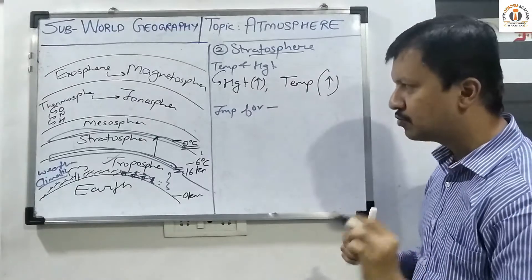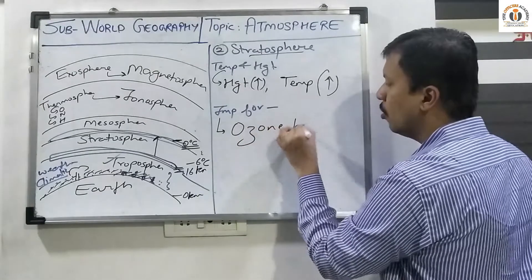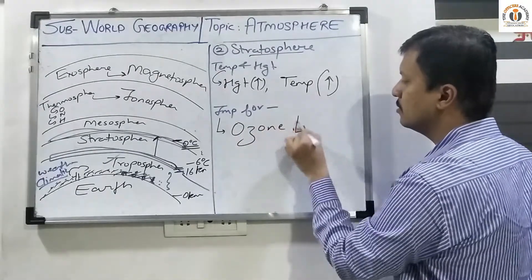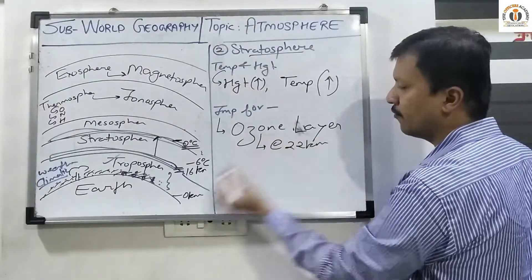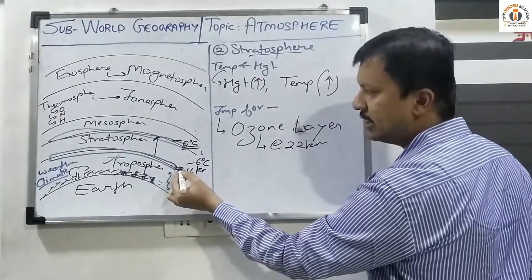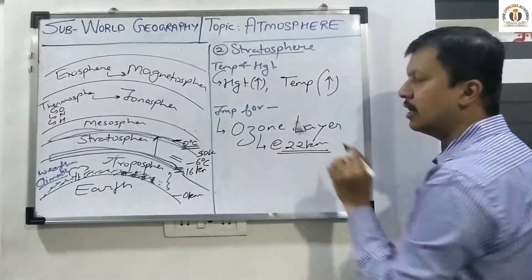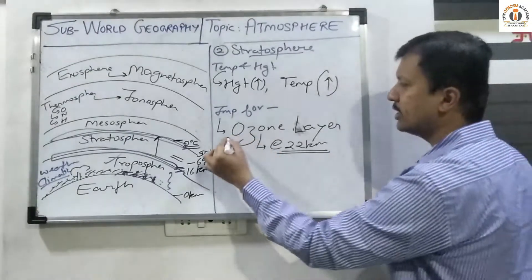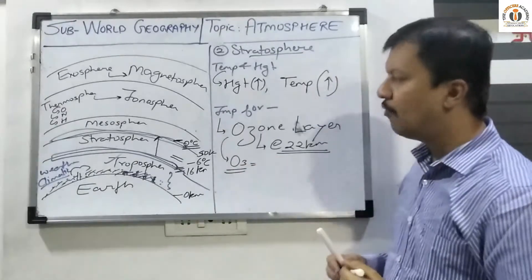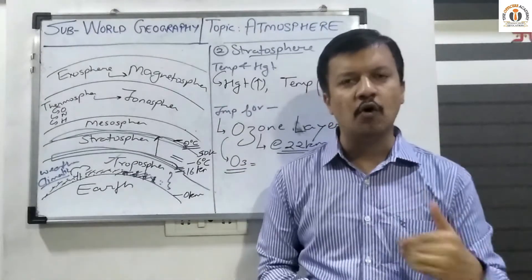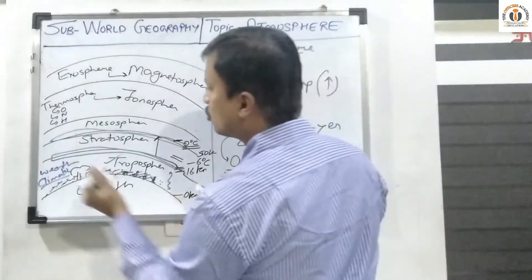Stratosphere is one of the most important layers of the atmosphere because within it lies the ozone layer. The ozone layer is present at a height of 22 kilometers from the earth's surface. Ozone is nothing but three molecules of oxygen — O3 — coming together. The ozone layer protects the earth from harmful UV rays.